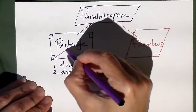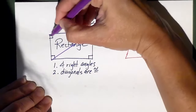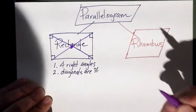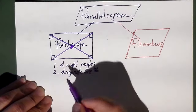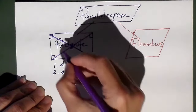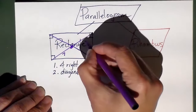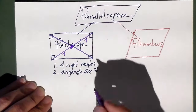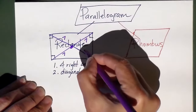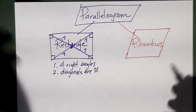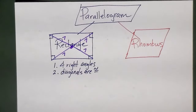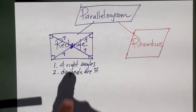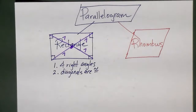If I draw this diagonal and I draw this diagonal, since it's a parallelogram they cut each other in half, right? But since it's a rectangle they're actually going to be congruent to each other. So if this piece is seven, that means the other piece also has to be seven because it's a parallelogram — they bisect. That means this one has to be seven and so does this one. So in a rectangle the diagonals are actually congruent to each other.